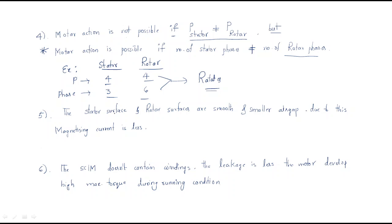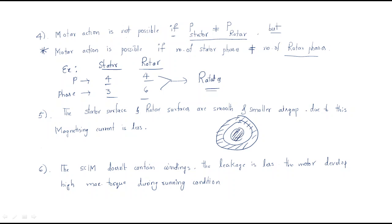Another feature: the stator surface and rotor surface are smooth with a small air gap. Because the surfaces are very smooth and the air gap is low, the magnetizing current required is less. Whenever the magnetizing current is less, the power factor will be better. If the air gap is high, it requires more magnetizing current to send the flux from stator to rotor.